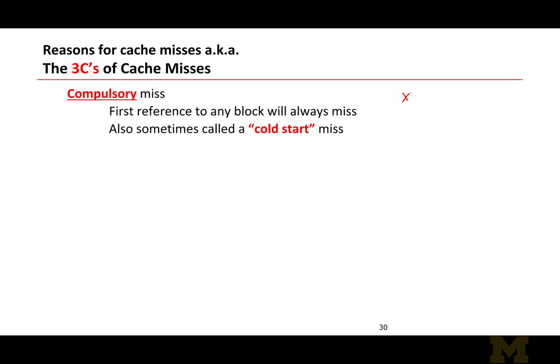If we want to reduce the number of compulsory misses, we can use spatial locality. If I'm going to access an address X, I'm more likely to also access addresses close to it, like X plus one. Even though I may not have accessed X plus one before, it's possible to turn that access into a cache hit by placing X plus one and X in the same cache block. So by increasing the size of your cache block, you can reduce the number of compulsory misses.